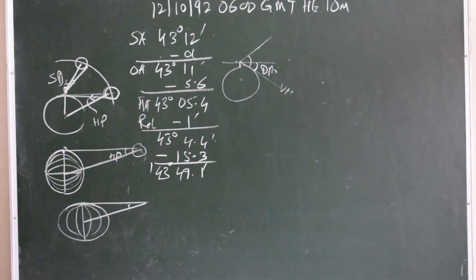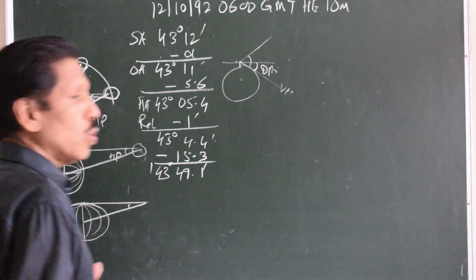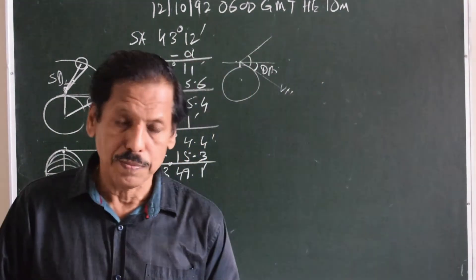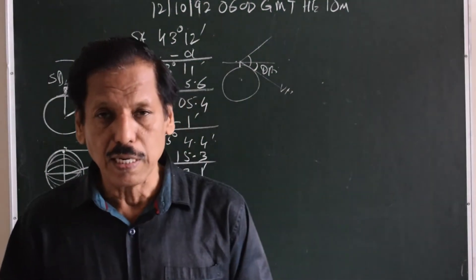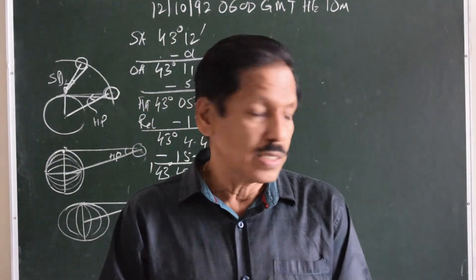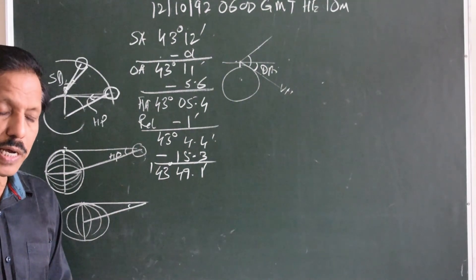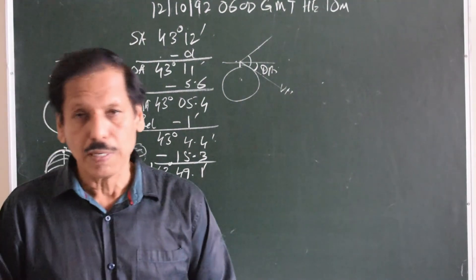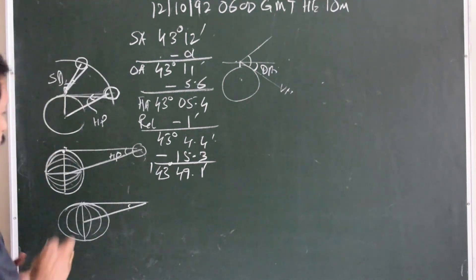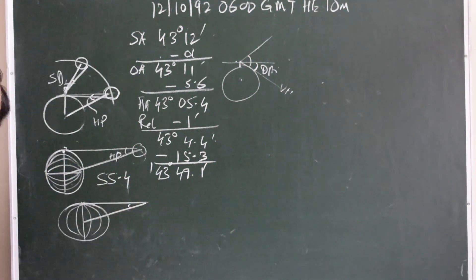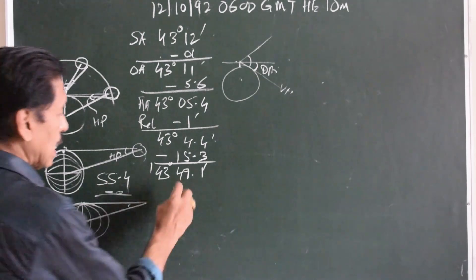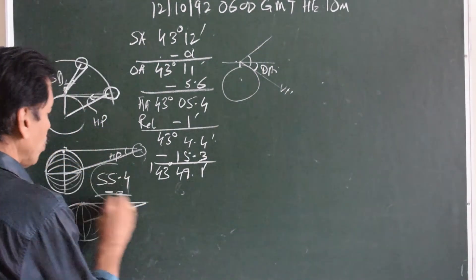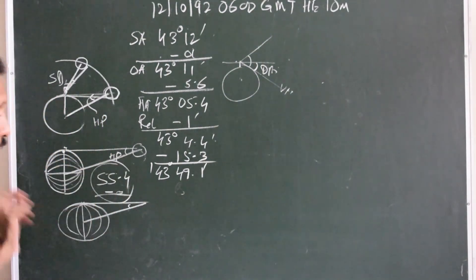I need to reduce the HP given for every GMT hour using a table called the reduction table, found around page 456 or 458 of the nautical almanac. Reduction in case of latitudes close to the equator is very small. In this particular case, the horizontal parallax at the GMT hour on that day is 55.4, but the reduction from the table is negligible. So I will assume horizontal parallax as 55.4.